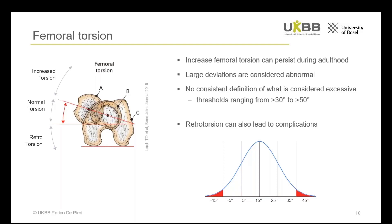Large deviations are usually considered abnormal; however, there is no consistent definition of what should be deemed as excessive femoral torsion, with different reference values ranging between 30 and 50 degrees. On the other side of the distribution, retrotorsion is also considered pathological, as it can lead to different types of complications.